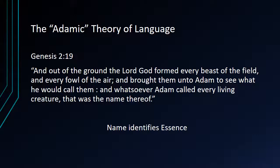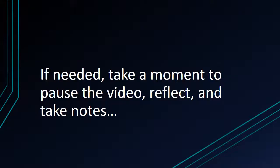"And out of the ground the Lord God formed every beast of the field and every fowl of the air, and brought them unto Adam to see what he would call them, and whatsoever Adam called every living creature, that was the name thereof." This is the idea that Adam saw a goat, somehow knew that there was an essential goatness about this goat, and thus called it by its true name: goat. That the name of the thing identifies some essence of that thing, some reality of it.